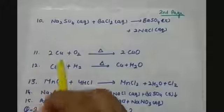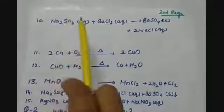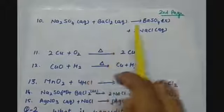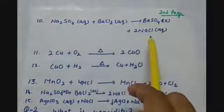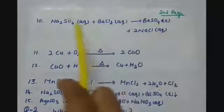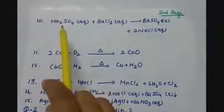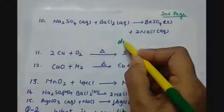Then we have sodium sulfate reacting with barium chloride and forming barium sulfate and sodium chloride. Here you can see that an exchange of elements has been done between the compounds, and that is why this is a double displacement reaction.